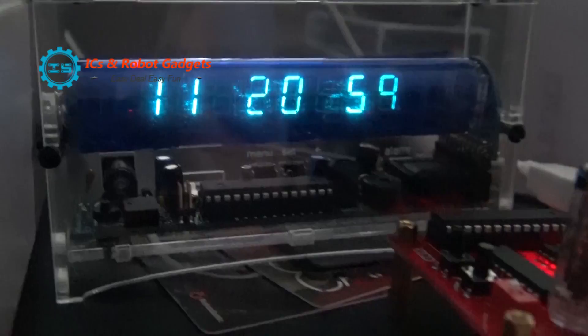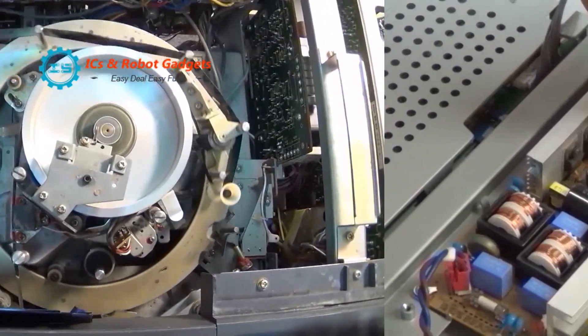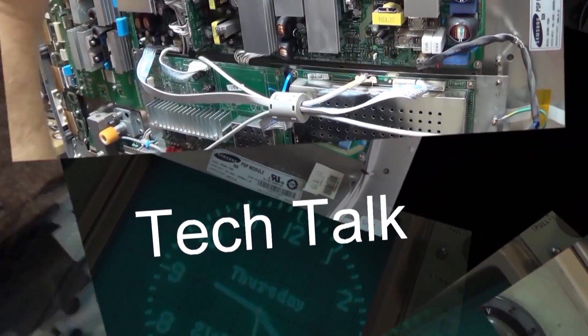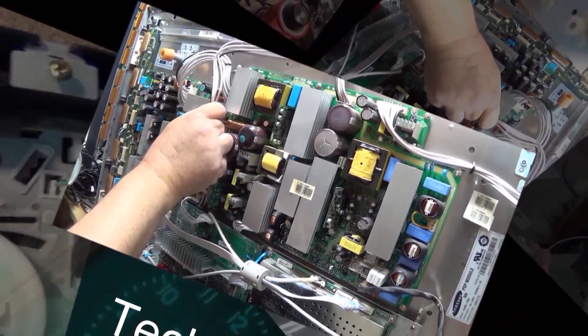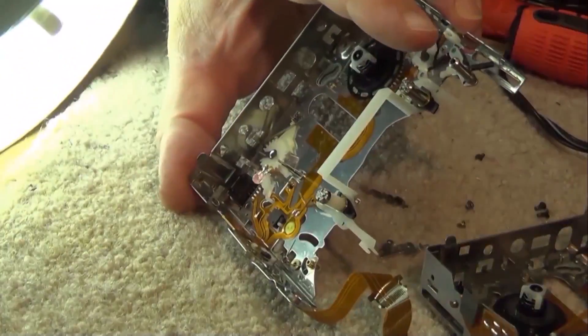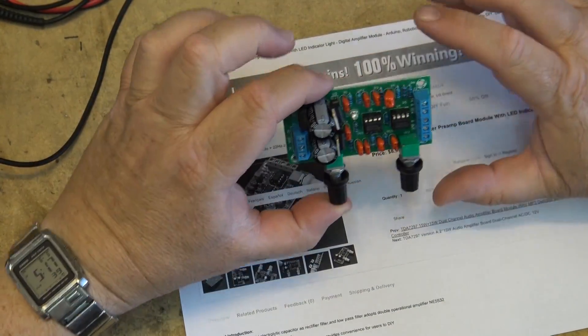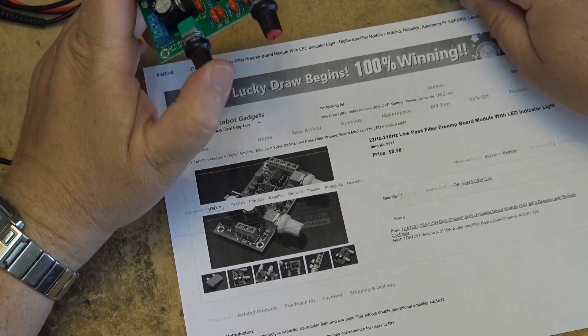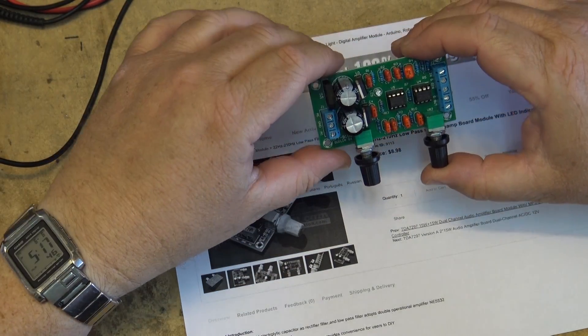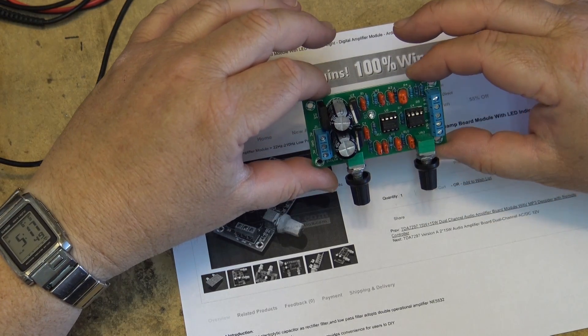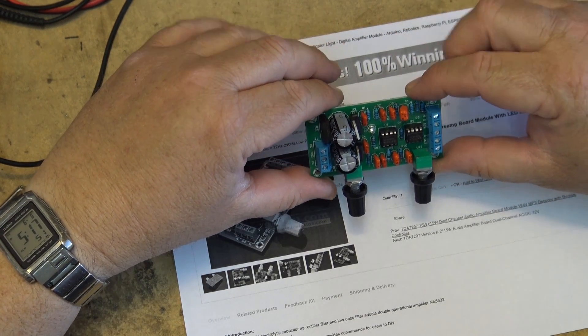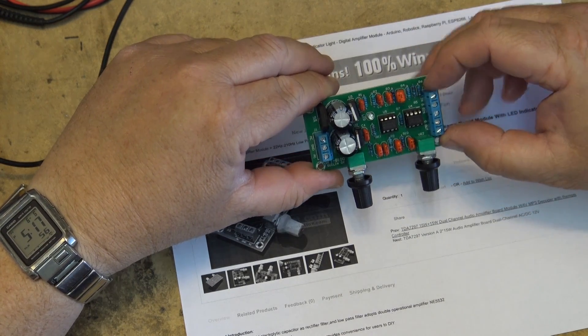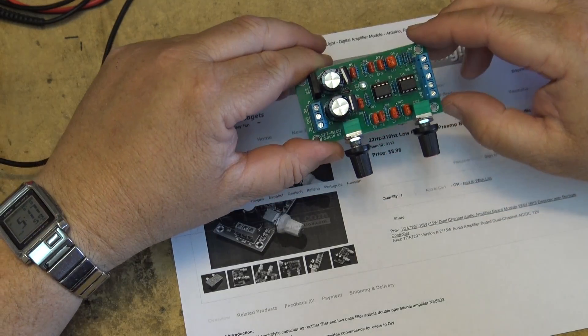In this video I'm going to look at a subwoofer low-pass filter amplifier module. This takes your stereo preamp output and gives you a mono low frequency only output for your sub amp. Here's another module that I was sent to evaluate from IC Station. This is a low-pass filter preamp, in other words a subwoofer driver. You feed your audio signal in and it gives you just the bass output to drive a subwoofer.